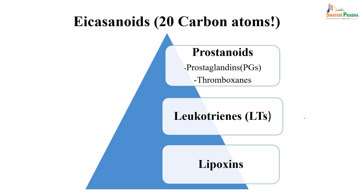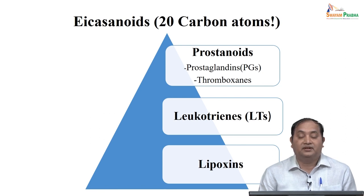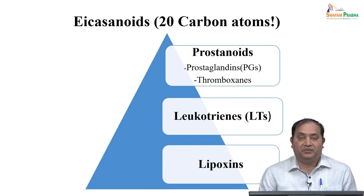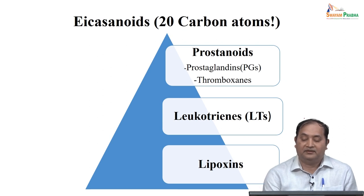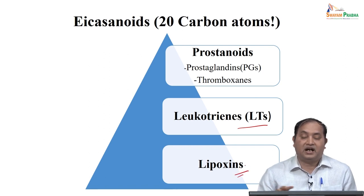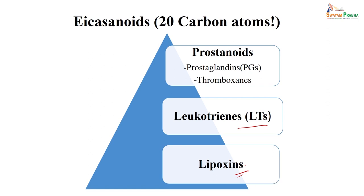Another autocoid we need to discuss is eicosanoids. Eicosanoids means there are 20 carbon atoms combined. What are eicosanoids? One group is prostanoids, which includes prostaglandins and thromboxane. In the 1970s and 80s, a lot of research was done on prostaglandins, which led to several NSAIDs being developed. Along with prostaglandins and thromboxane, we also have leukotrienes — many drugs have been developed for bronchial asthma — and another compound called lipoxins. Eicosanoids include prostanoids (prostaglandins and thromboxane), leukotrienes, and lipoxins.